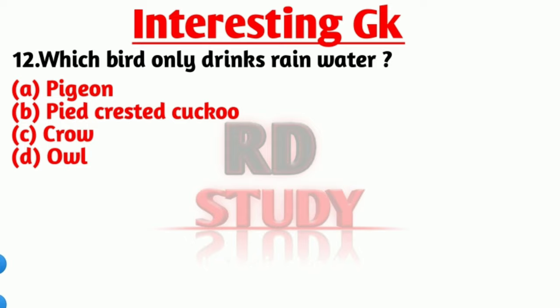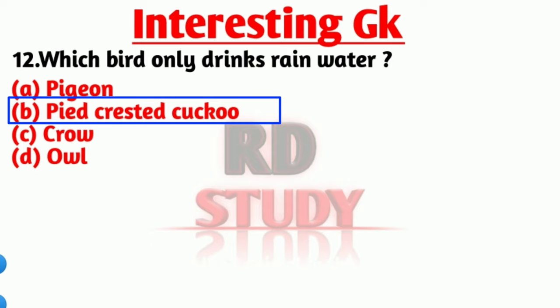Question number 12 is: which bird only drinks rain water? The right answer is option B, Pied Crested Cuckoo. The Pied Crested Cuckoo bird only drinks rain water.